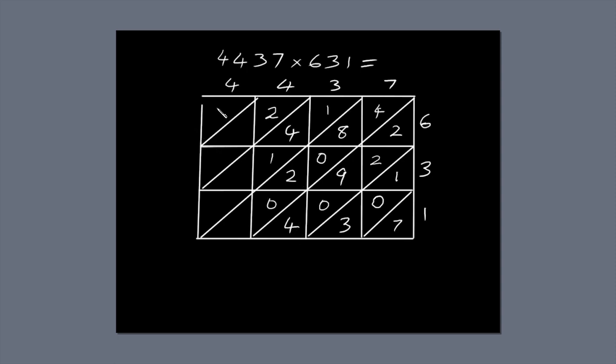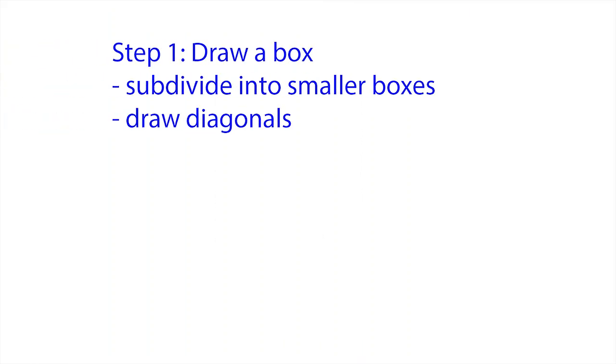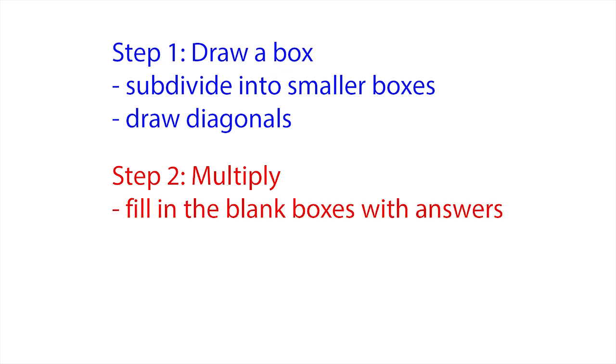The final column is the same as the one we just completed, because it's also multiplying 4 by the same set of numbers. So we can just copy our answers over. Done. That's step 2. Multiply and fill in the blanks with your answers.